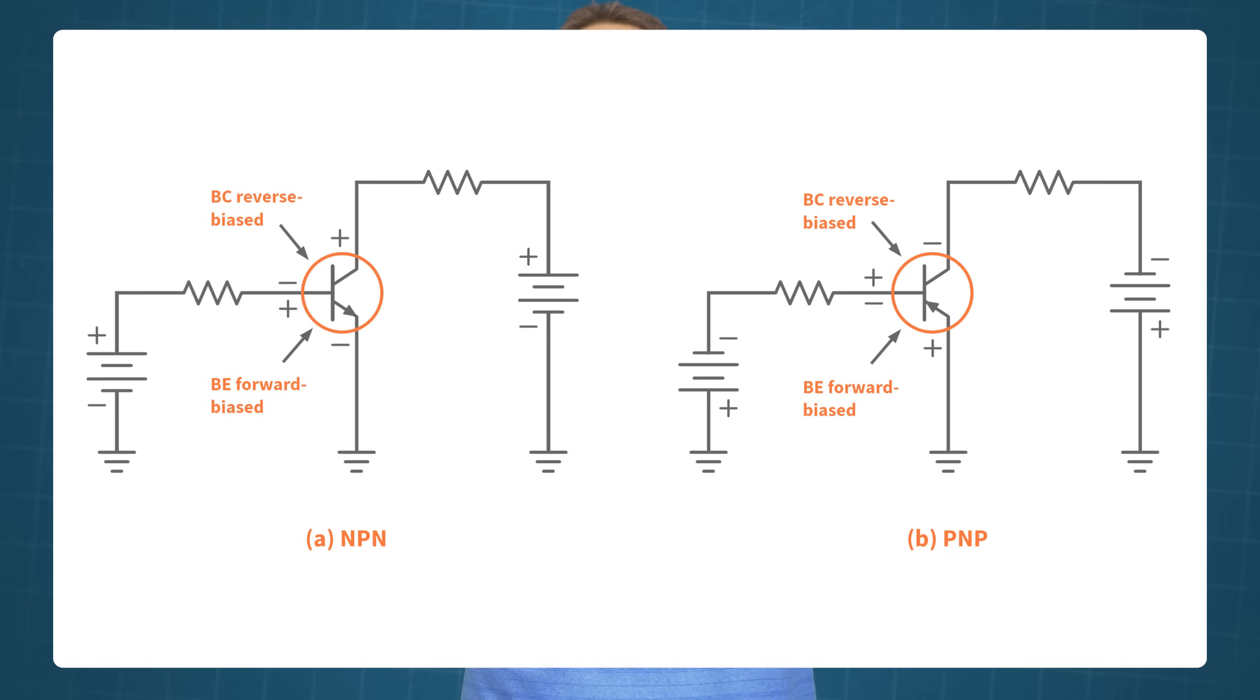In order for a bipolar junction transistor to operate as an amplifier, its base-emitter junction must be forward biased, while the base-collector junction is reverse biased. Please note that this means that an NPN transistor and a PNP transistor are backwards compared to each other. And, as mentioned earlier,